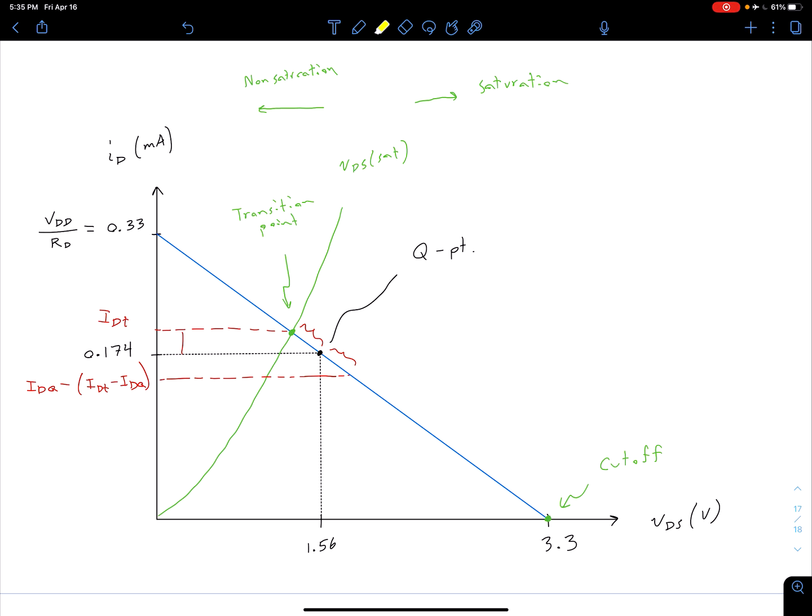So ideally, we would like to move this Q point somewhere here, where we could move a little bit more freely on either side. Now, something to keep in mind on top of that, though,